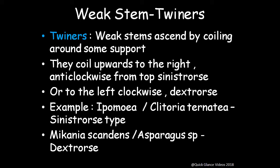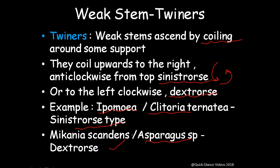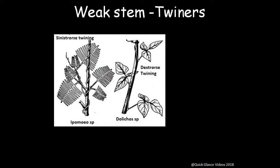Tweeners are weak stems that ascend by coiling around some support. They coil upward in a right anticlockwise direction, called sinistrous, or in a left clockwise direction, called dextrose. For example, Ipomoea and Clitoria are sinistrous types, while Mechaneus candens and Asparagus species are dextrose types.